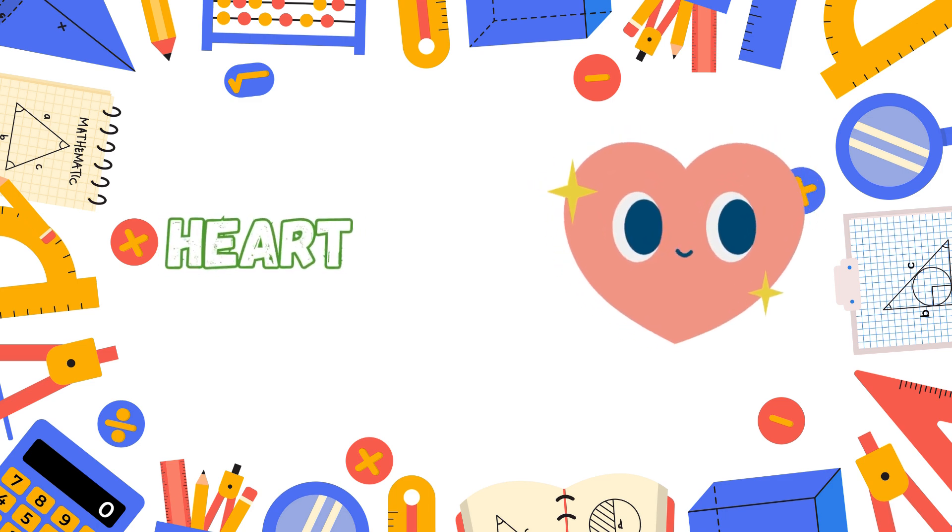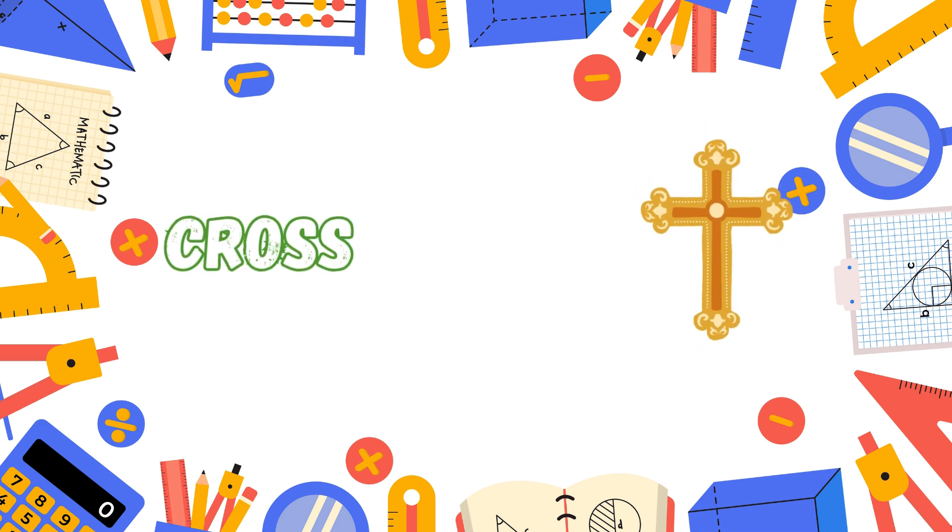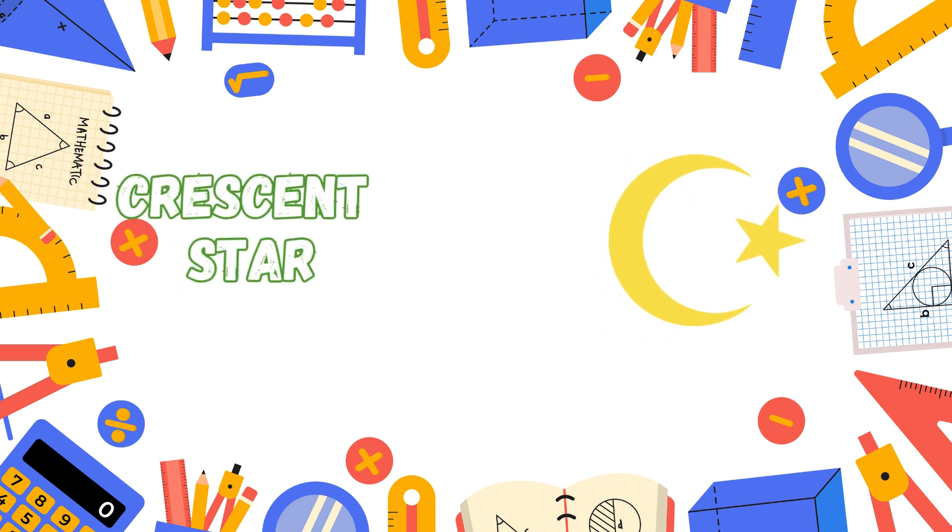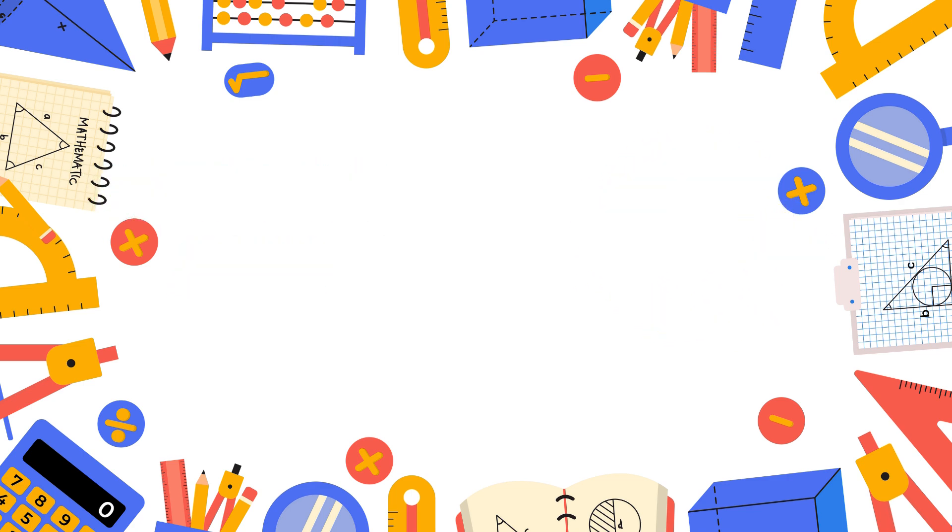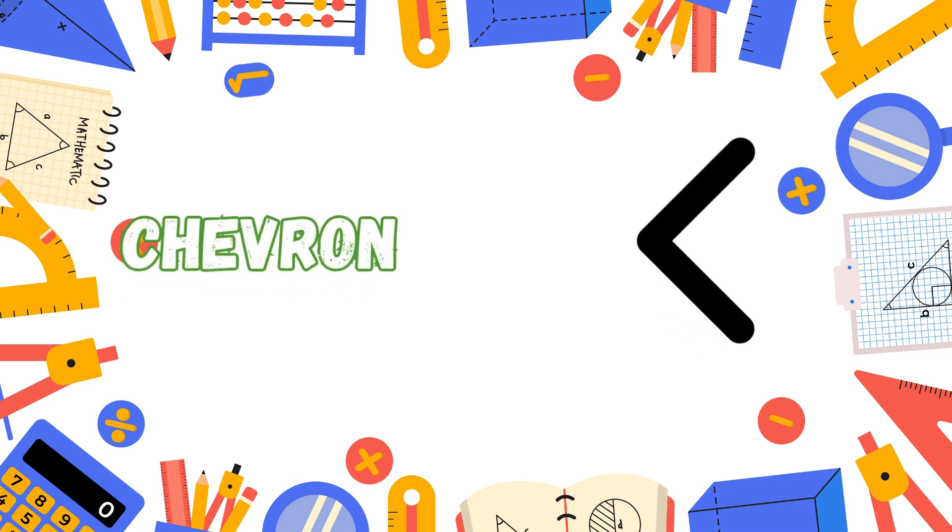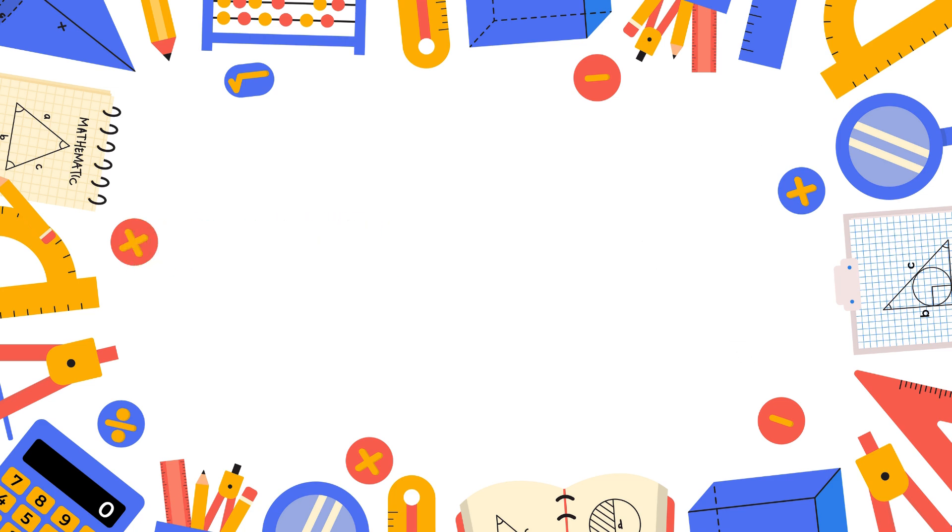Heart shows love, a lovely sight. It beats for you with pure delight. Cross stands tall with arms so wide, a guiding shape on every side. Crescent star up in the sky, it shines with shapes both low and high. Chevron looks like a pointed V. It shows a path for you and me.